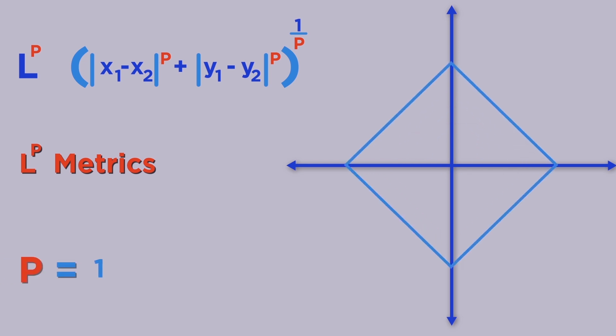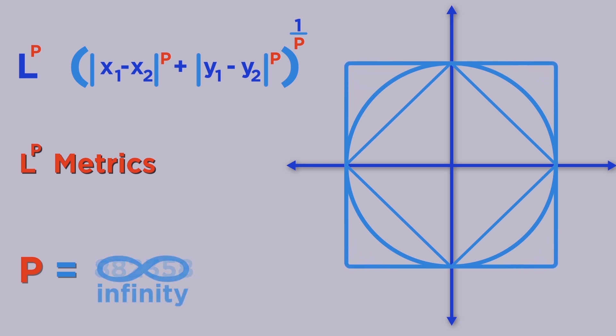So what do circles look like under these Lp metrics? When p equals 1, you get the taxicab metric we saw before, so the circle looks like a diamond. As p gets a little bigger, closer to 2, the circle begins to look more like the circle you know and love. When p equals 2, it's the Euclidean metric, and so we get a normal circle. Then, as p keeps getting bigger, the circle starts to look more like a square. In the limit, as p goes toward infinity, it turns into a square.